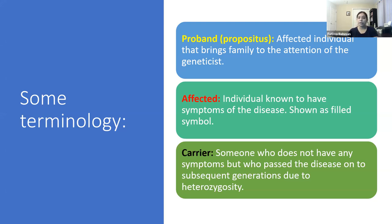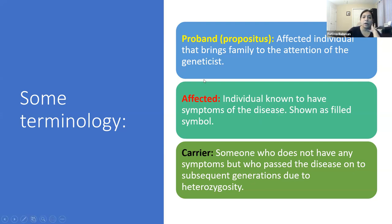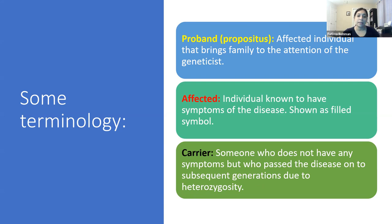Three key terms to remember: proband or propositus, affected, and carrier. The proband is the affected individual who comes into the doctor's office — for example, someone you discover has a BRCA1 mutation causing breast cancer — the one who is bringing the family to the attention of the geneticist. Affected individuals are anyone known to have symptoms of the disease, shown as the filled symbol. Carriers are someone who did not show any phenotype of the disease but did pass it on to one of their progeny — they are heterozygous — and that's only true for recessive disorders.